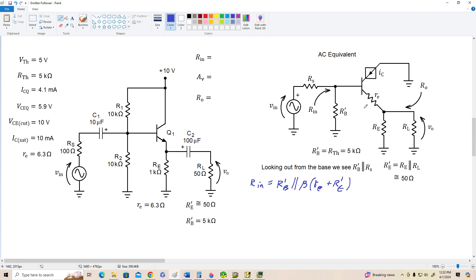Alright, now let's determine the voltage gain. First of all, we've got two things affecting the gain here. We've got a voltage divider formed between RS and the input resistance of the amplifier. So that's going to form a factor that's equal to RN divided by RN plus RS.